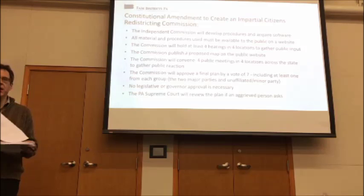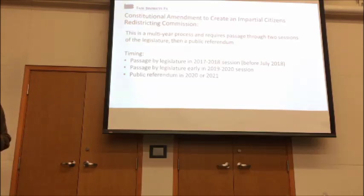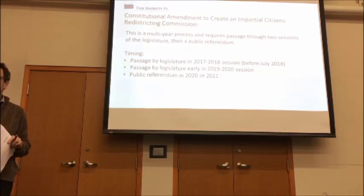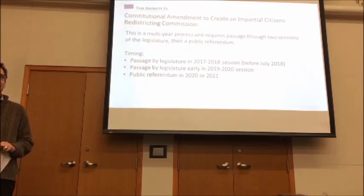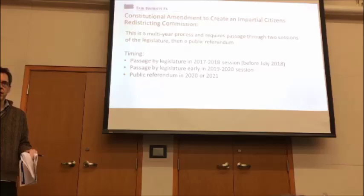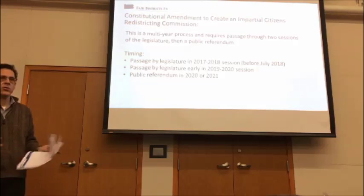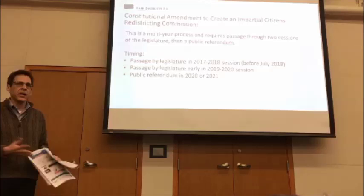We just elected a new legislature, taking office in January. The way a constitutional amendment gets passed: it has to be voted on by the state house and state senate, then two years must pass and a new legislature gets elected and must pass it one more time. Once passed twice, it goes on the ballot as a public referendum, voted up or down by the people of Pennsylvania. If we get it approved in this coming two-year session and re-approved in the following session, it could come up for referendum in the 2020 or 2021 general election.